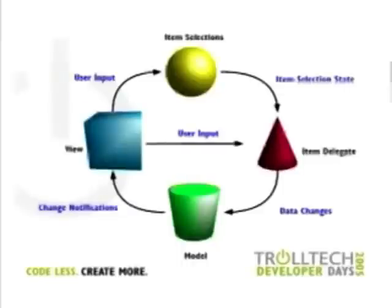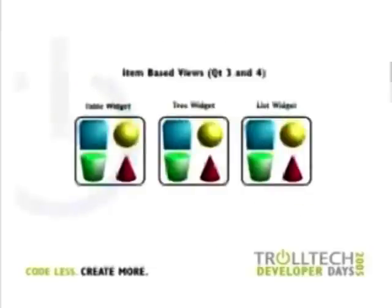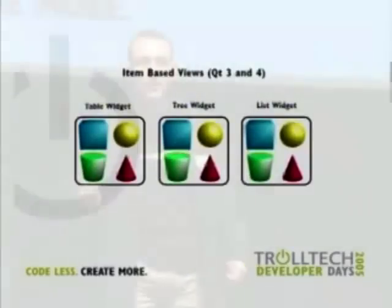This is how we used to do it in Qt3. We took all this functionality and shoehorned it into single classes — one implementation for a tree view had the selection, the expanding of branches, and the data all stored in one class. Everything was put together. In Qt4 you can still do that; we provide convenience classes for when you don't care about being efficient or sharing, and just want to display some data.